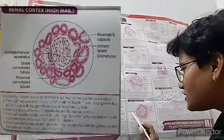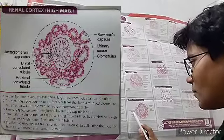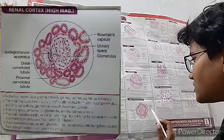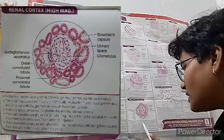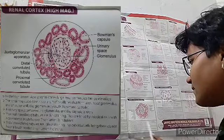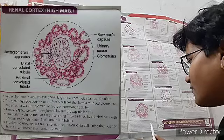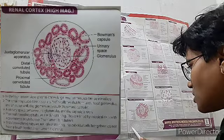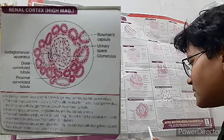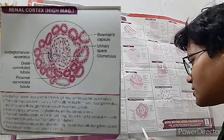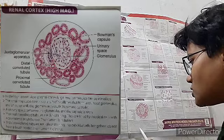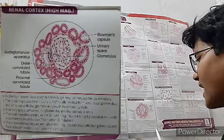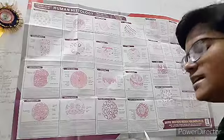Now the renal cortex at high magnification. Visible structures include the juxtaglomerular apparatus, distal convoluted tubule, proximal convoluted tubule, Bowman's capsule, urinary space, and glomerulus. Large renal corpuscles can be identified, consisting of tuft capillaries forming a rounded glomerulus and an outer wall called the glomerular capsule or Bowman's capsule. A urinary space between the glomerulus and the capsule is seen. Proximal convoluted tubules are dark staining, lined by cuboidal cells with a prominent brush border and indistinct lumen. Distal convoluted tubules are lighter staining, with cuboidal cells lacking a brush border.